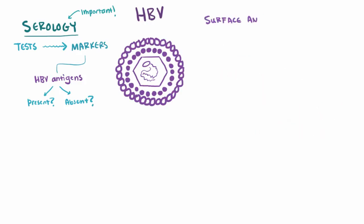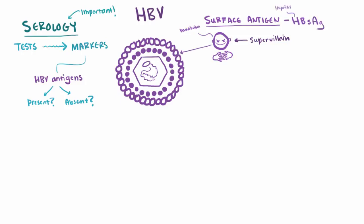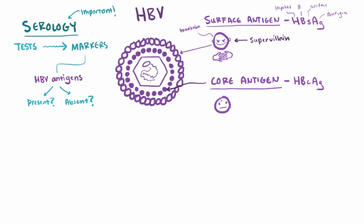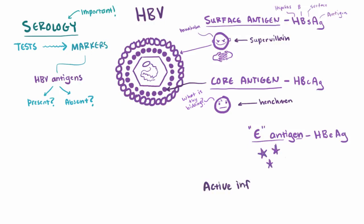The key marker for HBV infection is the HBV surface antigen, HBsAg — think of this like the supervillain, living on the surface of the virus. Another marker is the core antigen, HBcAg — antigens from the core of the virus, like dispensable henchmen working inside the villain's factory. Finally, there's the E antigen, which is secreted by infected cells and serves as a marker of active infection. Along with viral DNA, it tells us the virus is actively replicating and infecting.